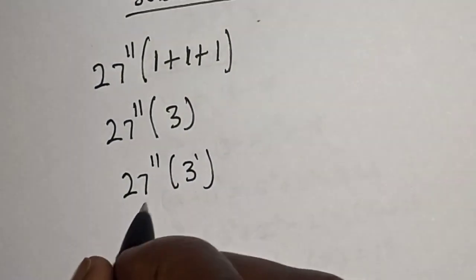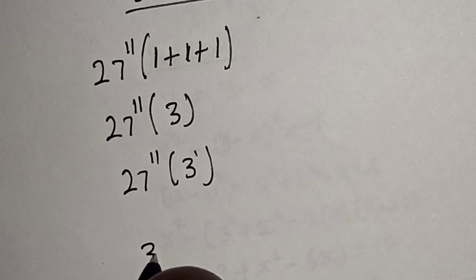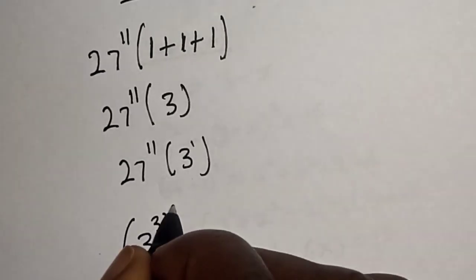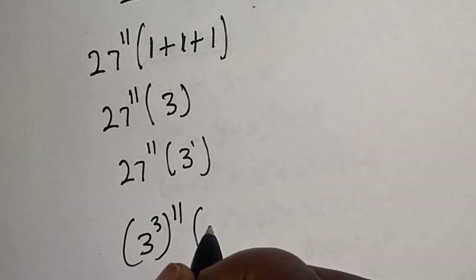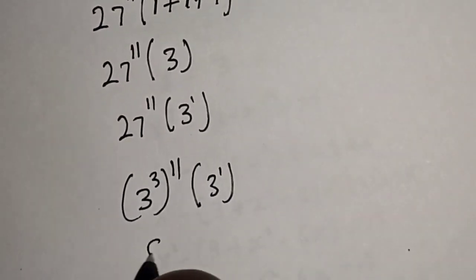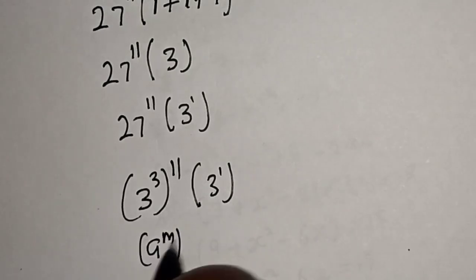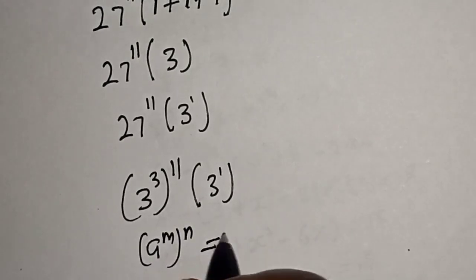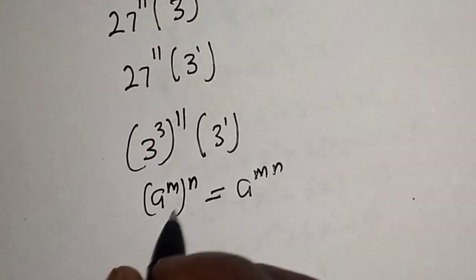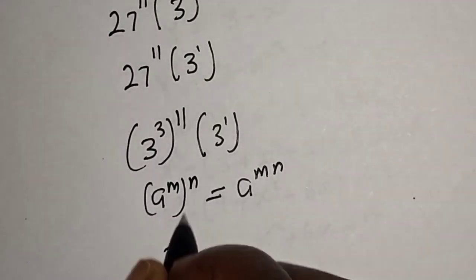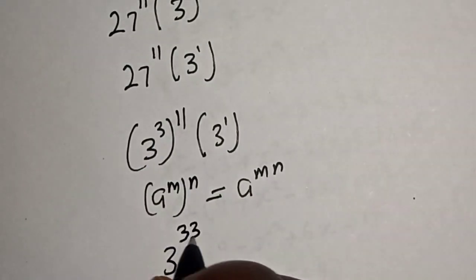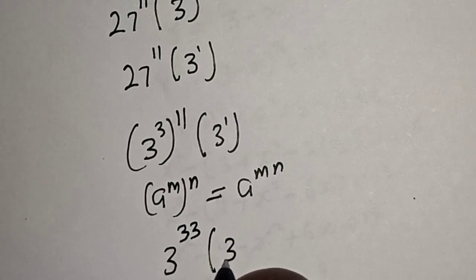Now, 27 can be written as 3 raised to power 3. So we have 3 raised to power 3, raised to power 11, multiplied by 3 raised to power 1. Using the rule that a raised to power m raised to power n equals a raised to power (m times n), this becomes 3 raised to power 33, multiplied by 3 raised to power 1.